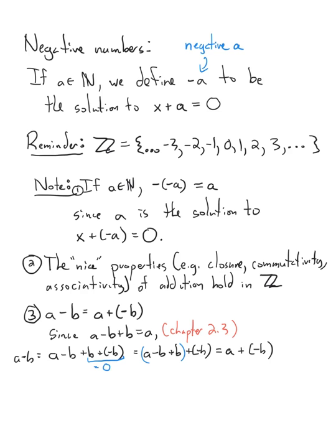Now that we've talked about divisibility, let's finish up this chapter by talking about the integers. To talk about the integers, I need to tell you what a negative number is first. If we have a counting number — let's call that counting number a — then we're going to define the negative of that counting number as the number that, when you add it to a, you get zero.